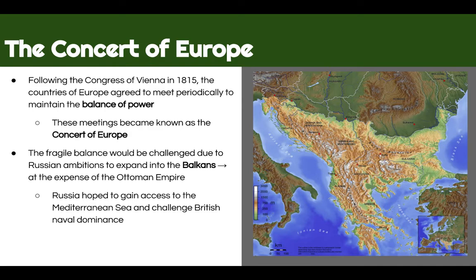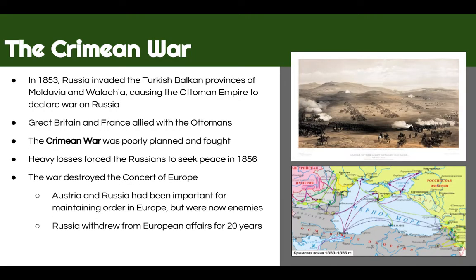Not everybody's going to take this lying down, so we'll get a war — the Crimean War — which breaks out in 1853. Russia invades the Turkish Balkan provinces, and the Ottoman Empire declares war on Russia. Because Great Britain and France don't want Russia expanding, they form an alliance with the Ottomans. The Crimean War is basically the first modern war in the world, fought with modern weaponry and more modern tactics, but it is poorly planned and fought overall. Heavy losses make the Russians seek peace in 1856.